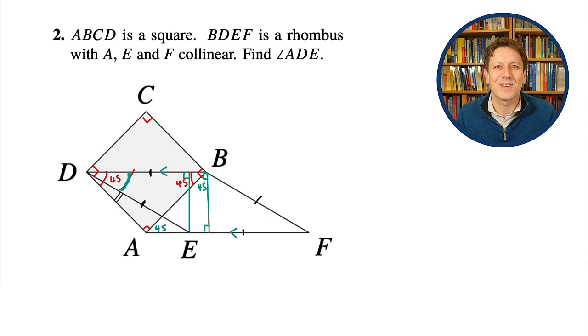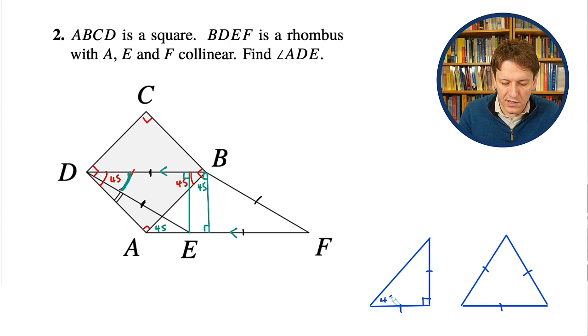There are two types of triangles that come up all the time in Math's Challenge and Olympiad problems, and they're these ones. They're a right angled isosceles triangle, whose angles are 45 degrees, and an equilateral triangle, which has angles of 60 degrees.